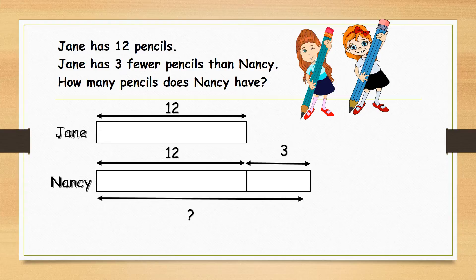We need to add the number of pencils which Jane has, which is 12, and the 3 more pencils which Nancy has. 12 plus 3 gives us 15. So Nancy has 15 pencils.